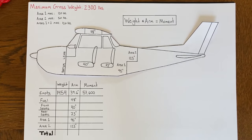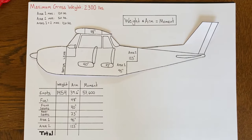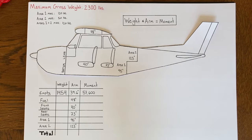Weight and balance part three: how to actually calculate weight and balance. Remember, calculating weight and balance for an airplane is important for two reasons. We need to keep the airplane within its total weight limits. We talked last time about the maximum gross weight or maximum takeoff weight. In this example, using numbers typical from a Cessna 172, the maximum gross weight is 2,300 pounds.